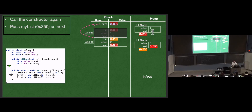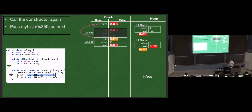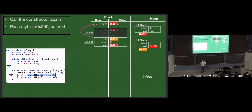Then we do it again: new LLNode(3, first). First at that point is 0x200. So next is 0x200. Let's say 480 for the new object — first is reassigned to 480. Now 'first' stores a reference to the node with value 3, which stores a reference to 200 with value 2, which stores a reference to 350 with value 1, which has a next of null. So we have the list 3, 2, 1 in memory, built up one object at a time, where each node can be anywhere in memory.